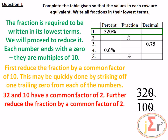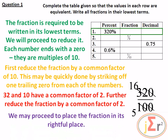32 and 10 have a common factor of 2, so we further reduce the fraction by 2. Two into 10 gives 5, and two into 32 gives 16. The fraction is therefore 16 over 5, or 16 fifths. This means 16 parts if the whole is divided into 5 equal parts, and since we have more than 5 parts, we have more than a single whole.